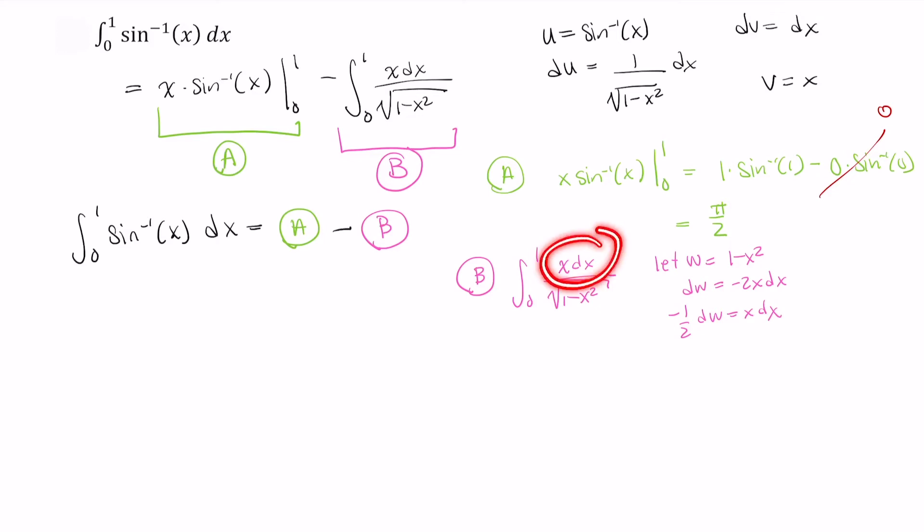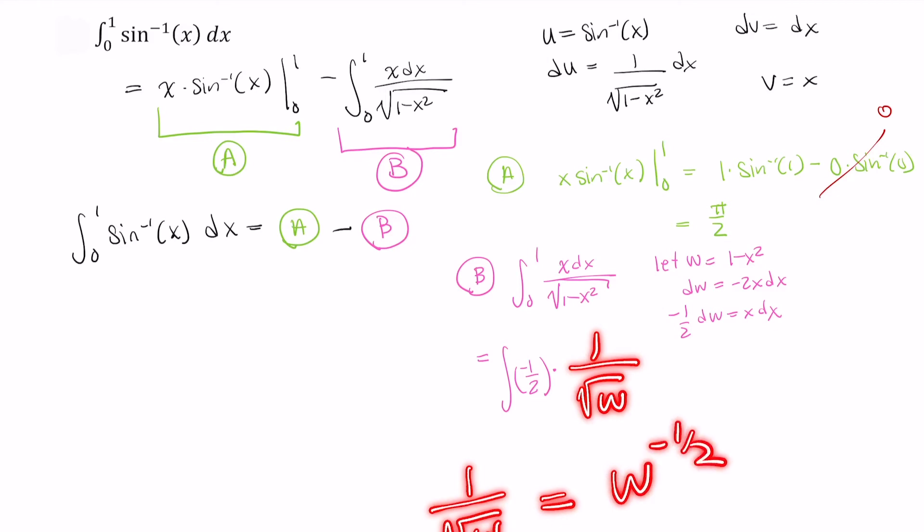I have x dx here in my numerator, so I can rewrite this as the integral of negative 1 half times 1 over the square root of w, and 1 over the square root of w is just equal to w to the negative 1 half power. So w to the negative 1 half power dw.